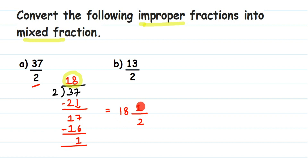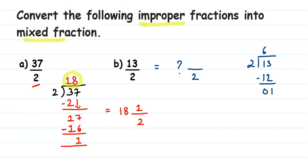Let's do the second question the same way. We divide 13 by 2: 2 sixes are 12, subtract to get a remainder of 1, so the quotient is 6. Writing it as a mixed fraction: the denominator is 2, the whole number is 6, and the remainder 1 goes in the numerator. So the answer is 6 and 1/2.